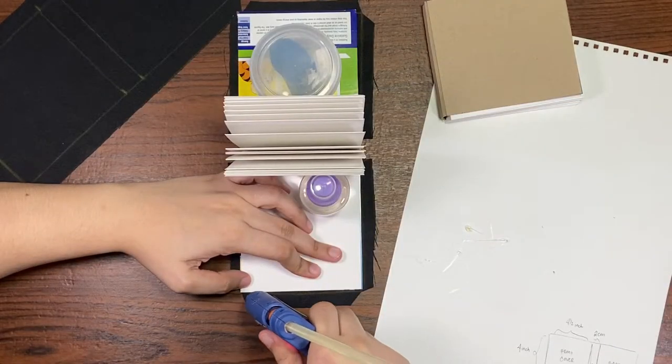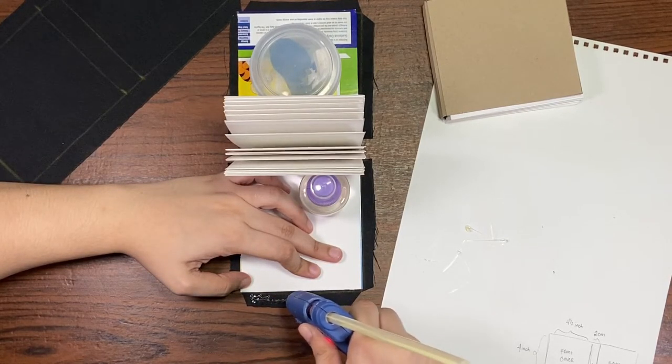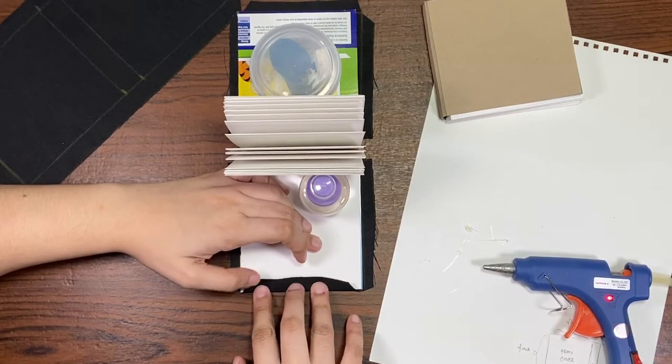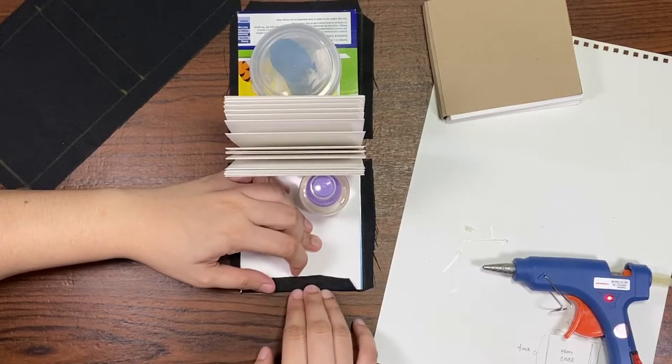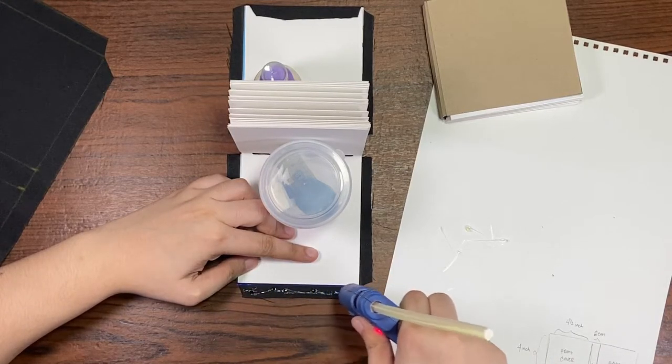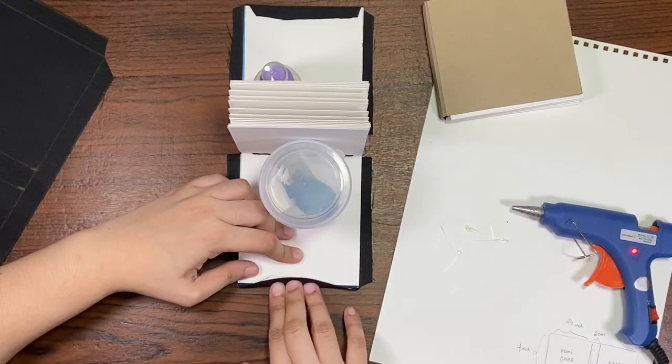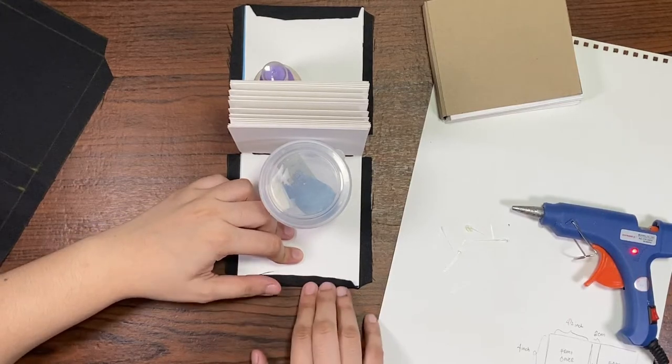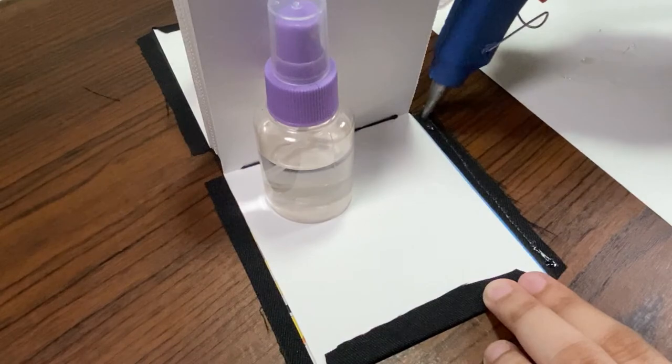Then I just use my glue gun again. First, gluing the top and the bottom here. And then next, I glued the sides.